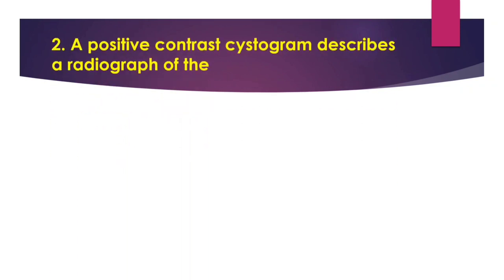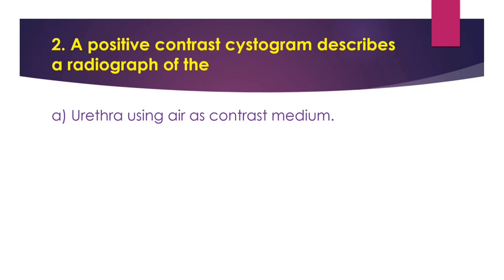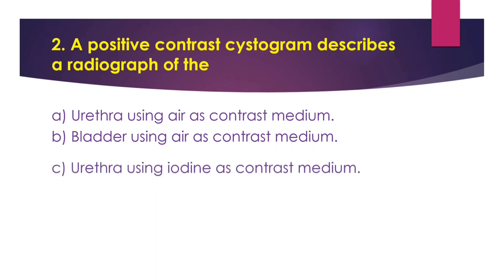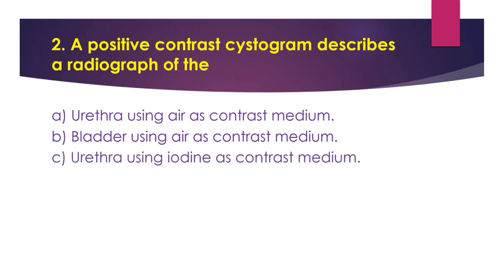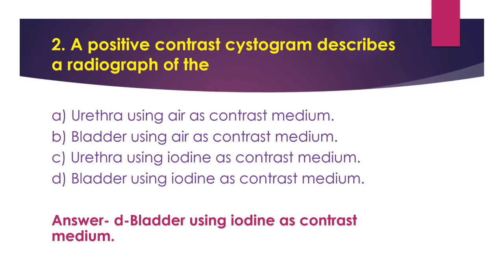Question number 2: A positive contrast histogram describes a radiograph of the - Option A - Urethra using air as contrast medium. Option B - Bladder using air as contrast medium. Option C - Urethra using iodine as contrast medium. Option D - Bladder using iodine as contrast medium. The answer is Option D - Bladder using iodine as contrast medium. Air is a negative contrast medium, while iodine is a positive contrast medium.